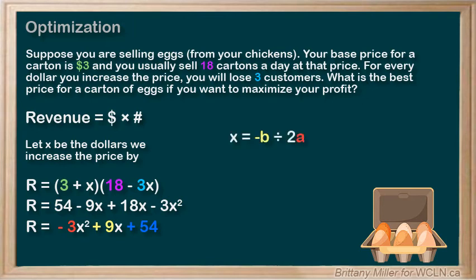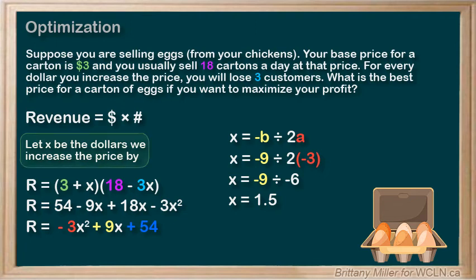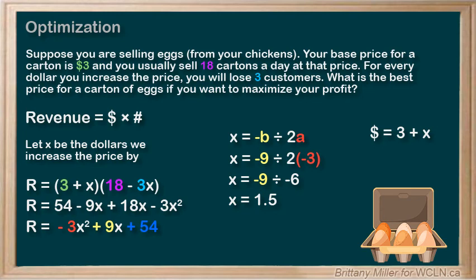Let's use negative B over 2A to find the vertex. X equals negative 9 over 2 times negative 3, which is negative 9 divided by negative 6, which is 1.5. Remember, X was the amount of dollars we would increase the price from the base price of $3. So the optimal price of a carton of eggs in this scenario is $3 plus $1.50, which is $4.50.